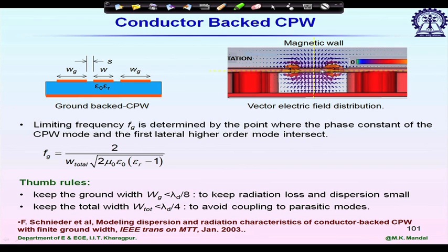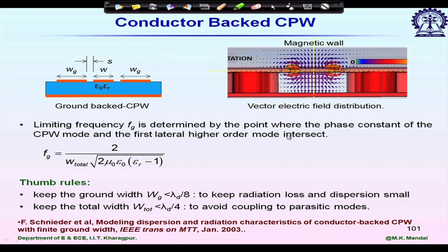Inside the slot we have the CPW mode as well as the microstrip line mode together. These two modes have almost similar velocities, so the dispersion effect can usually be neglected. However, we may have higher order modes associated with different velocities. If those higher order modes are excited, phase velocities will differ and we will face dispersion. To avoid that, we define one limiting frequency f_g, determined by the point where the phase constant of the CPW mode and the first lateral higher order mode intersect.